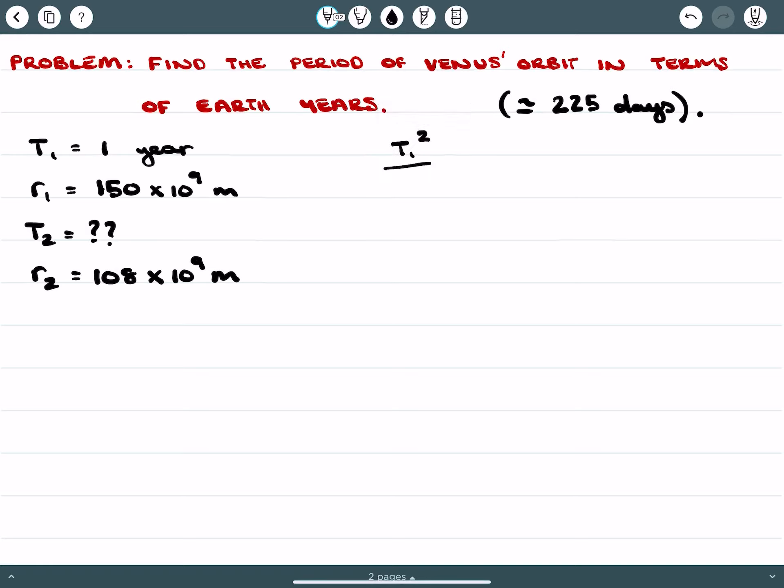We can use Kepler's law and plug in our values. The period for Earth is 1 squared, which leaves it as 1. The radius between Earth and the Sun is cubed. The period of Venus's orbit we don't know. The radius from Venus to the center of the Sun is 108 times 10⁹ cubed. We can rearrange in terms of the period.